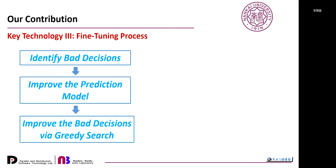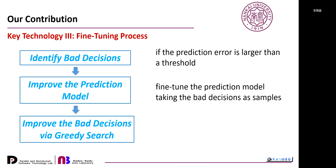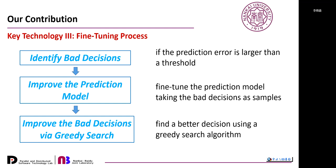The last key technology is the fine-tuning process. Although machine learning models can generalize to new workloads, there is no guarantee on decision quality, so the DRL model may sometimes make not-so-good decisions. This process has three steps: first, identify the bad decision by checking if the prediction error exceeds a threshold; second, use the bad decision as ground truth training samples to build a more accurate performance prediction model; third, use a greedy heuristic to find a better decision based on this updated model.